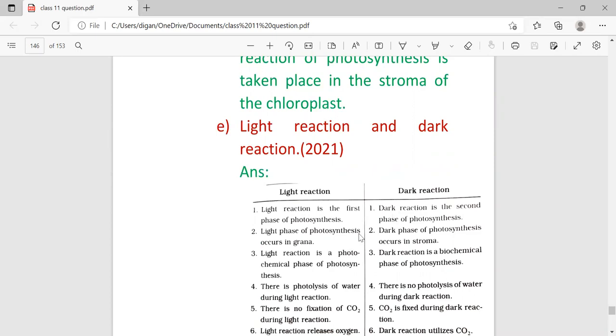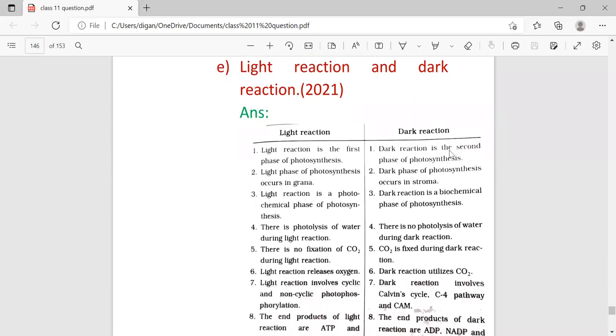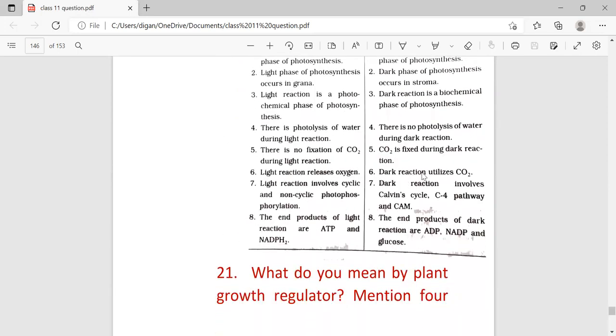Light reaction and dark reaction differentiation. Light reaction is the first phase of photosynthesis, whereas dark reaction is the second phase. Light reaction of photosynthesis occurs in grana, whereas dark reaction takes place in stroma. Light reaction is a photochemical phase, whereas dark reaction is a biochemical phase. There is photolysis of water during light reaction; no photolysis during dark reaction. There is no fixation of carbon dioxide in light reaction; carbon dioxide fixation takes place in dark reaction. Light reaction releases oxygen; dark reaction utilizes carbon dioxide. The end product of light reaction is ATP and NADPH2 which are used in dark reaction. The end product of dark reaction is ADP, NADP, and glucose.